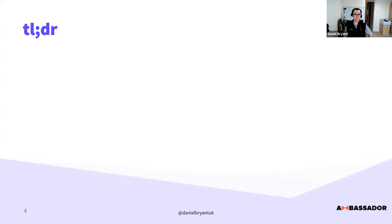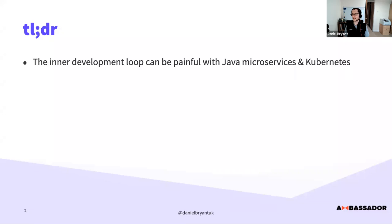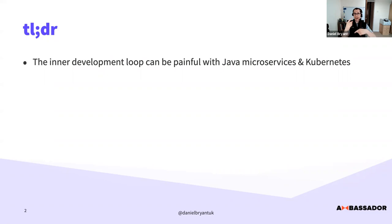The TLDR is that the inner development loop can be painful with Java microservices and Kubernetes. Java can be quite memory intensive, so if you only have a laptop with say 8 or 16 gigs, you can only run a few services locally. As you start getting bigger applications, that fast inner dev loop — where you want to code something and see the results — can slow down. This is a big problem.